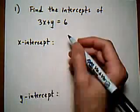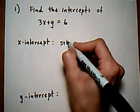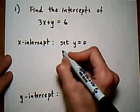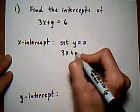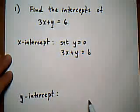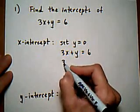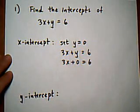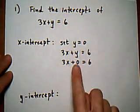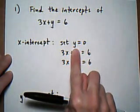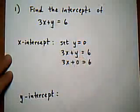To find the x-intercept, set y equal to 0. So we take the equation 3x plus y equals 6. We're going to set the y value equal to 0 and then solve for x. A quick way to do that is if you have y is 0, the y term disappears, so we're left with 3x equals 6 right away. And then you can solve, x equals 2.